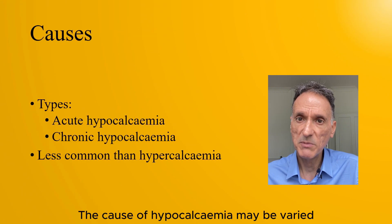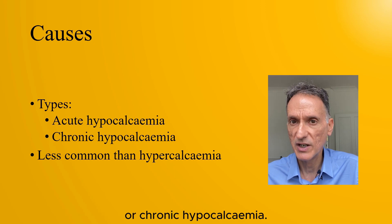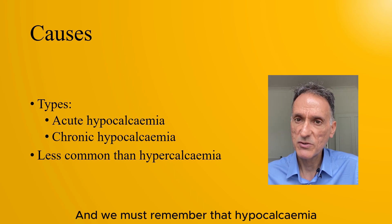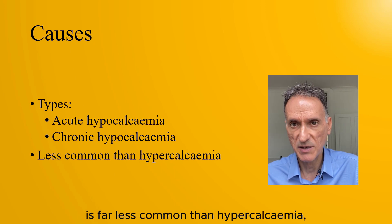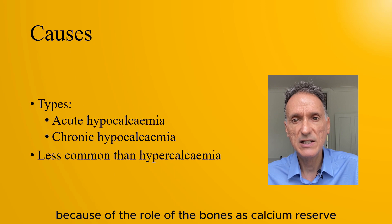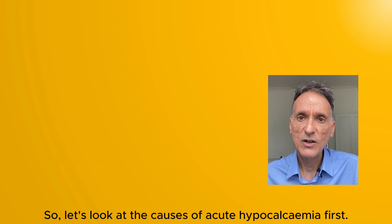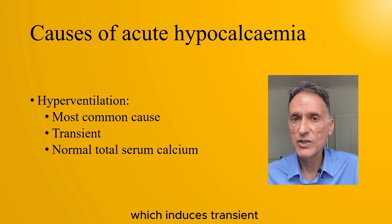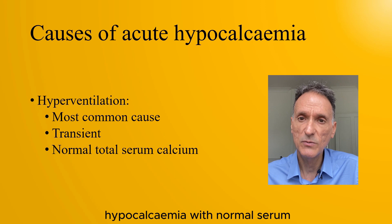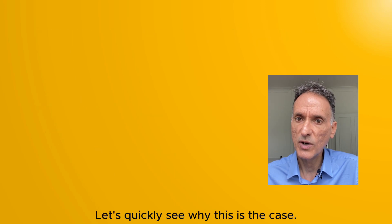The cause of hypocalcemia may be varied depending on whether we are talking about acute or chronic hypocalcemia. We must remember that hypocalcemia is far less common than hypercalcemia, because of the role of the bones as calcium reserve to maintain homeostasis. Let's look at the causes of acute hypocalcemia first. The most common cause is hyperventilation, which induces transient hypocalcemia with normal total calcium levels. Let's quickly see why this is the case.